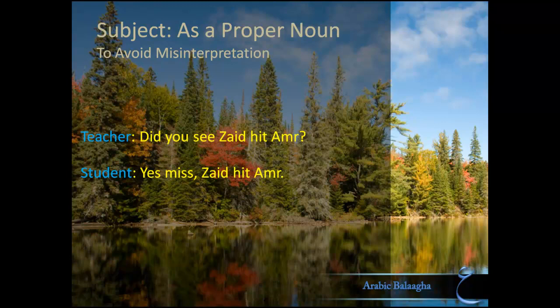A final benefit of mentioning the subject as a name is to make sure there can be no misinterpretation later on. For example, if Zayd hit Umar in school, a teacher would ask another student, 'Did you see Zayd hit Umar?' The student might say, 'Yes, Zayd hit Umar.' The student didn't need to say 'Zayd hit Umar' — he could have just said 'Yes, he hit Umar,' or even just 'Yes.' But he mentioned all parties by name to be firm and avoid any misinterpretation.